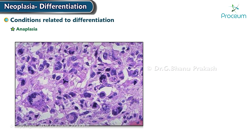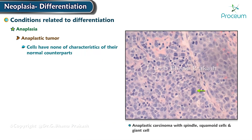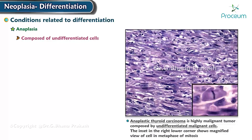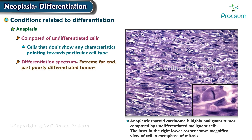Anaplasia refers to loss of differentiation and is a hallmark of malignant transformation. An anaplastic tumor does not resemble its tissue of origin at all. The cells have none of the characteristics of their normal counterparts, and it is impossible to tell what types of cells they are just by looking at them. Anaplastic tumors are composed of undifferentiated cells. On the differentiation spectrum, anaplastic tumors are at the extreme far end, past poorly differentiated tumors.